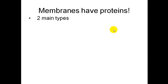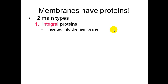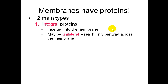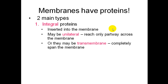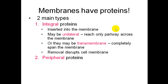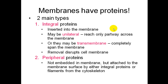The second component is proteins. There are two main types of proteins in the cell membrane. Number one are integral proteins — these are proteins inserted into the membrane. They may be unilateral, meaning they only go partway into the membrane, or they may be transmembrane, meaning they go completely through. The second type are peripheral proteins, which are not inside the membrane but are attached on the surface — either to integral proteins or to filaments from the cytoskeleton.